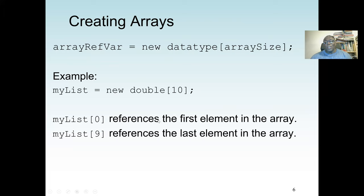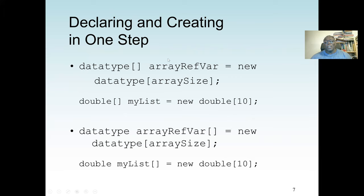We can now manipulate values in our array. When I write myList[0], it references the first value in the array. Since the size is 10, the last index is 9. We reference individual elements using their index. We can also write everything in one line: double[] myList = new double[10].